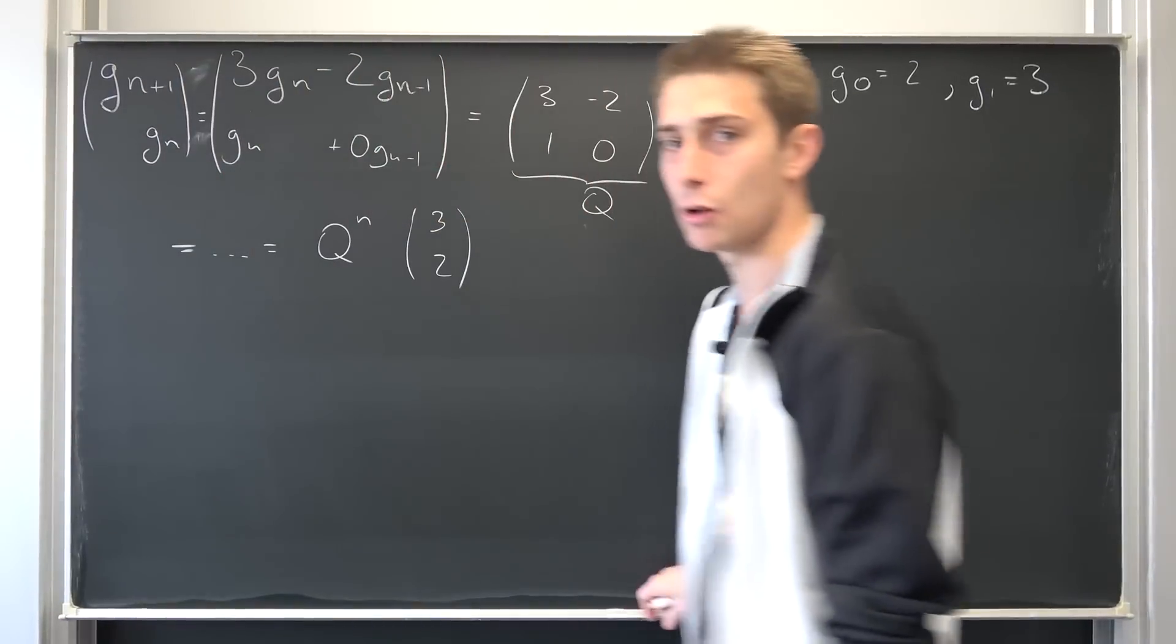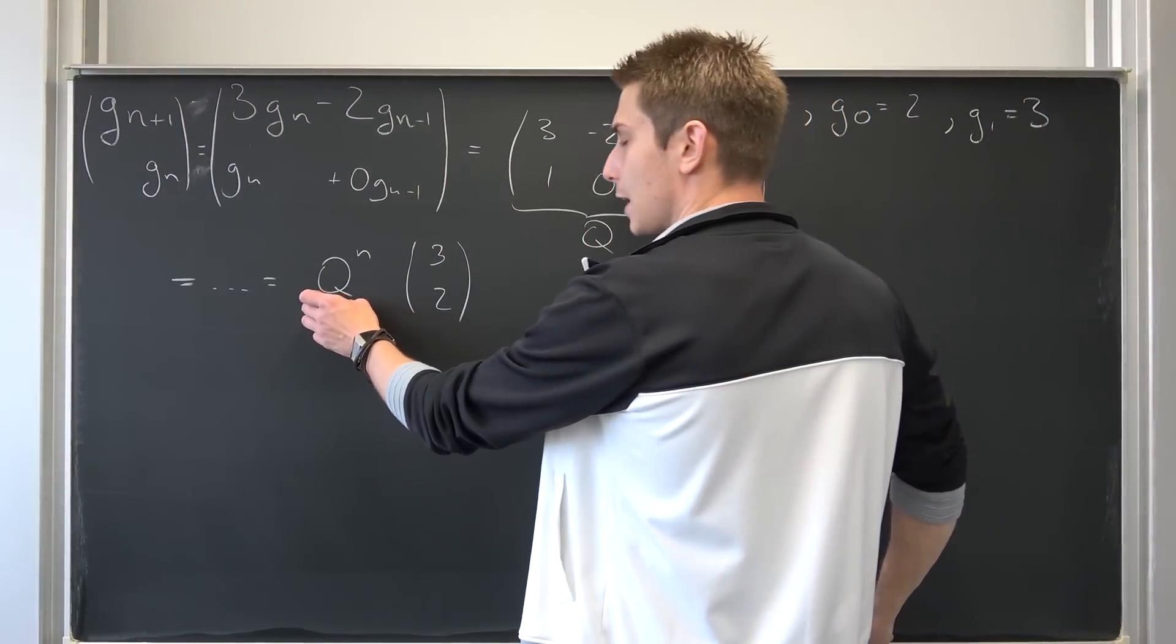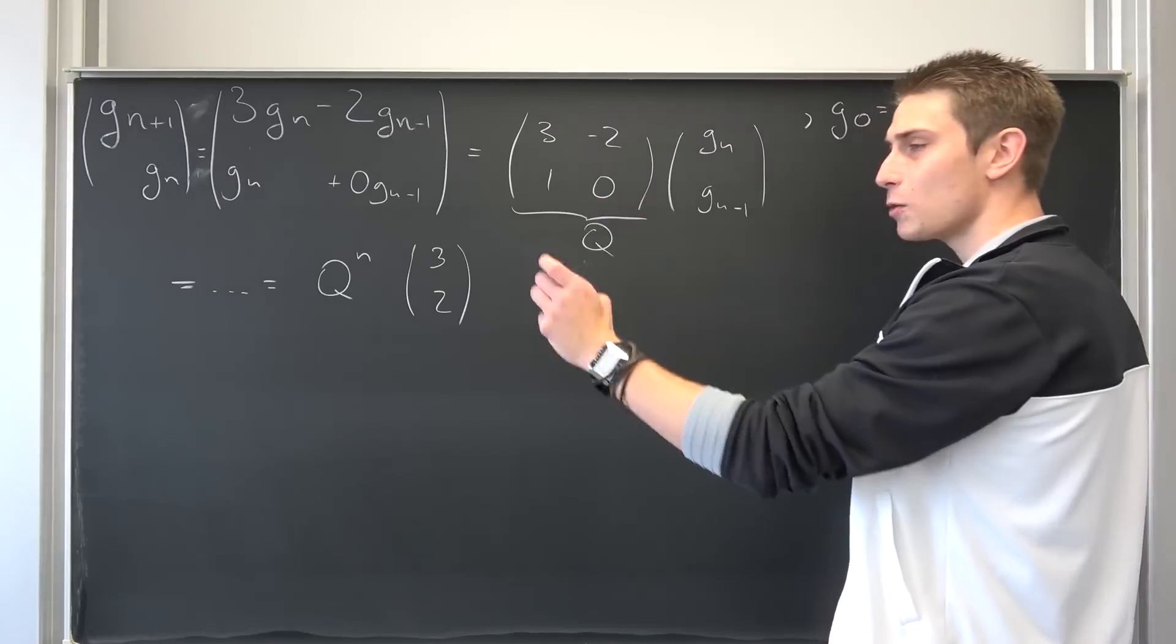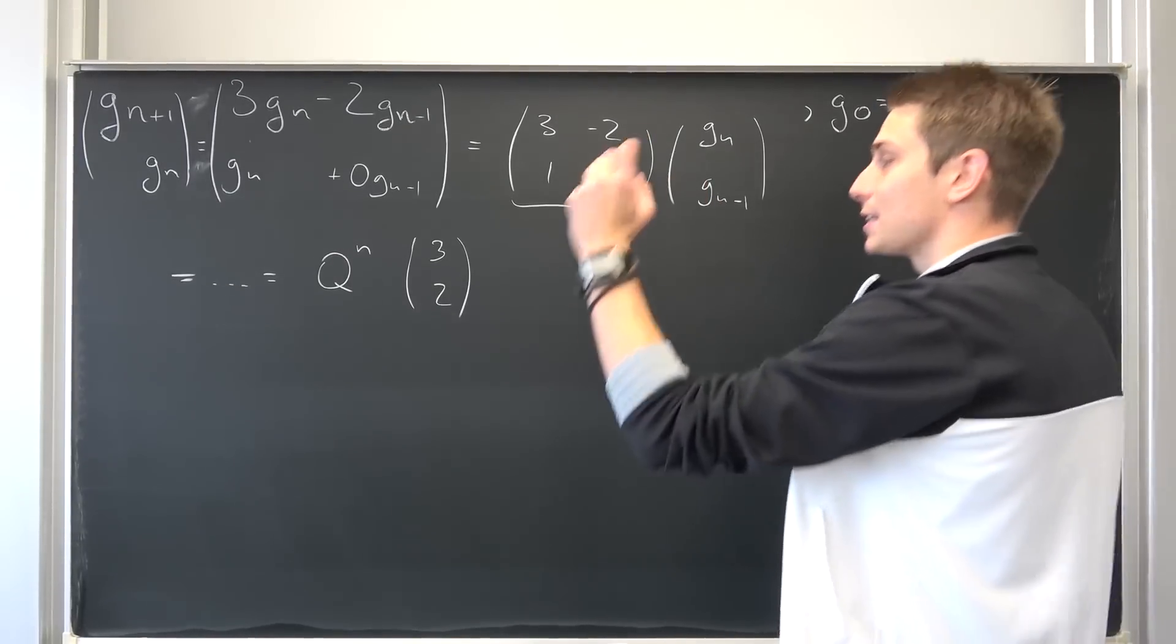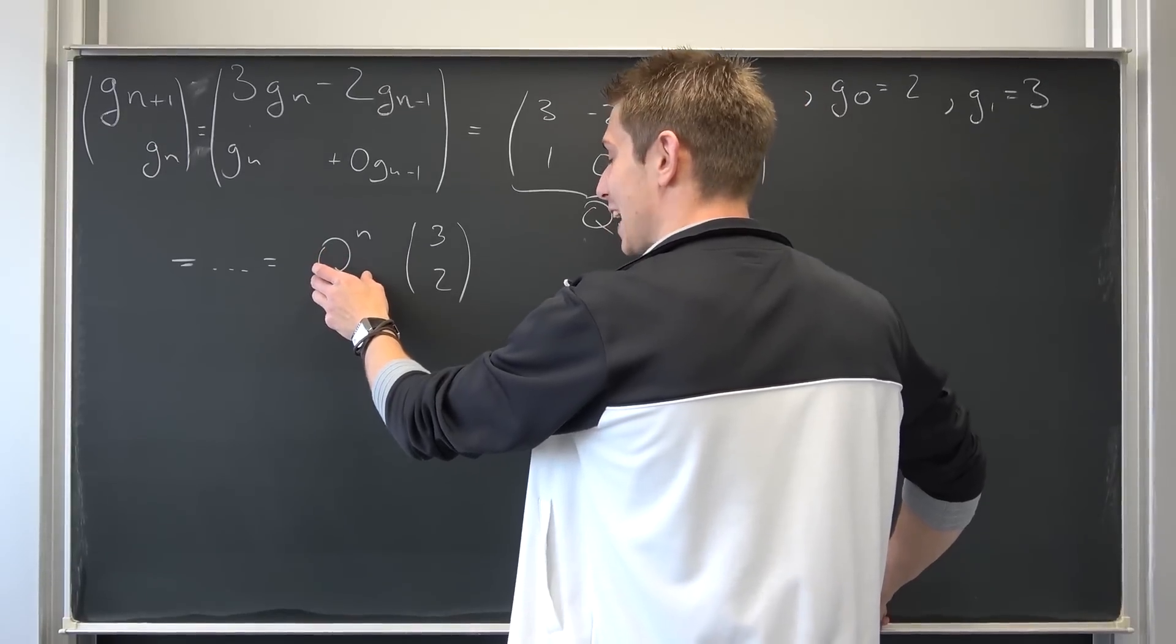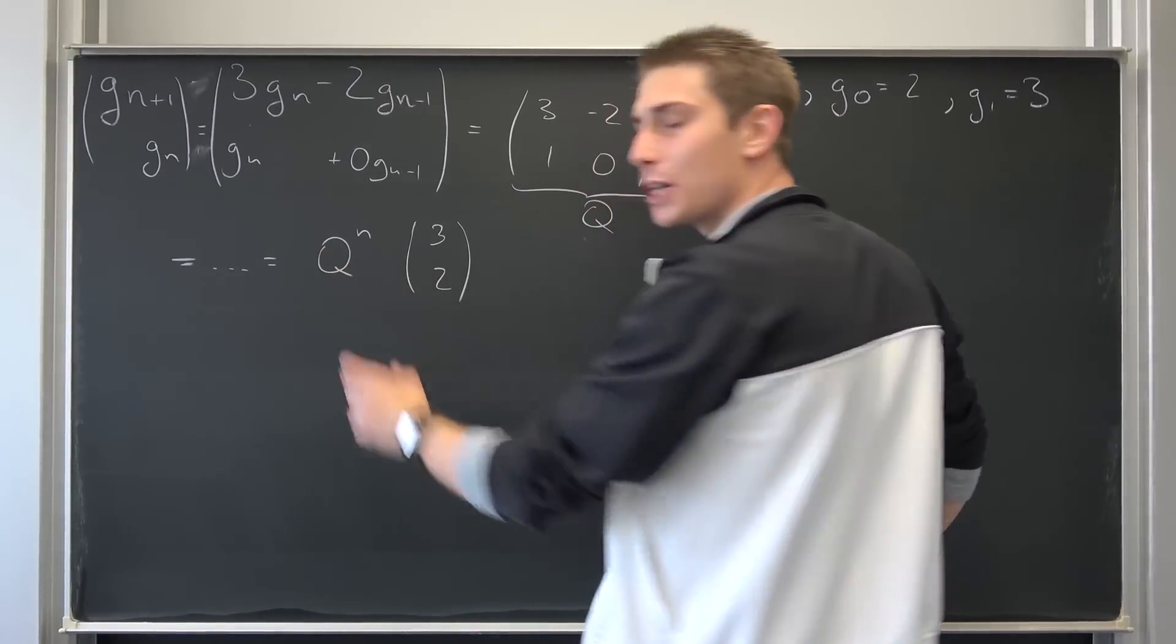I hope this does make sense. So after doing n iterations, we are going to end up with Q to the nth power and then g_1, g_0, which is nothing other than 3 and 2. And we can actually solve our recurrence relation by diagonalizing... What a weird fucking word! I hate to say it! By diagonalizing our Q.